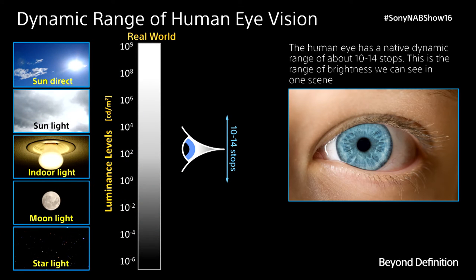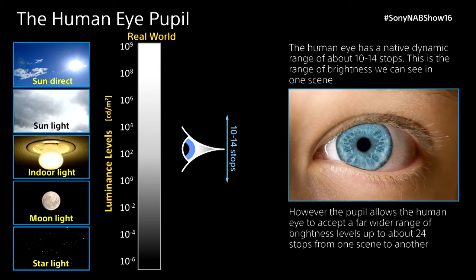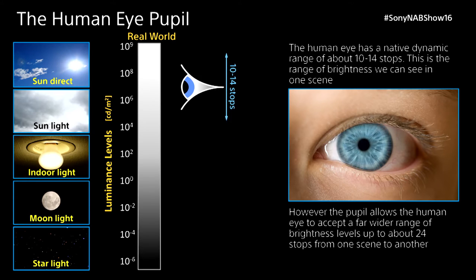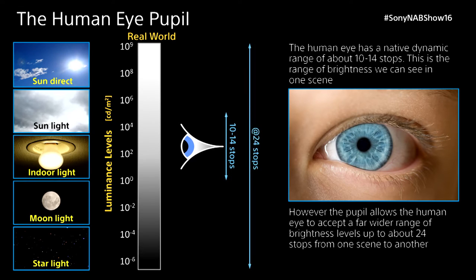That chart illustrates the range of brightness in nature, from absolute darkness — zero nits, or 10 to the minus 6 — all the way to about 10 to the 9, or 1.6 billion nits, if you were looking at the sun directly. The human eye has a range of about 14 stops of dynamic range in stationary or adaptation mode. By closing and opening the iris, all together, the human visual system is probably around 24 stops of dynamic range.